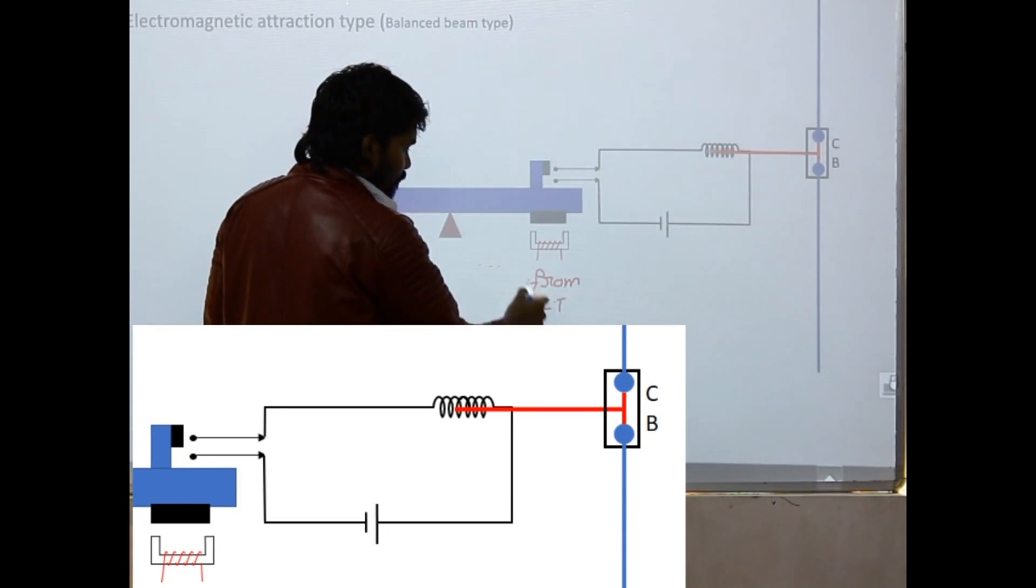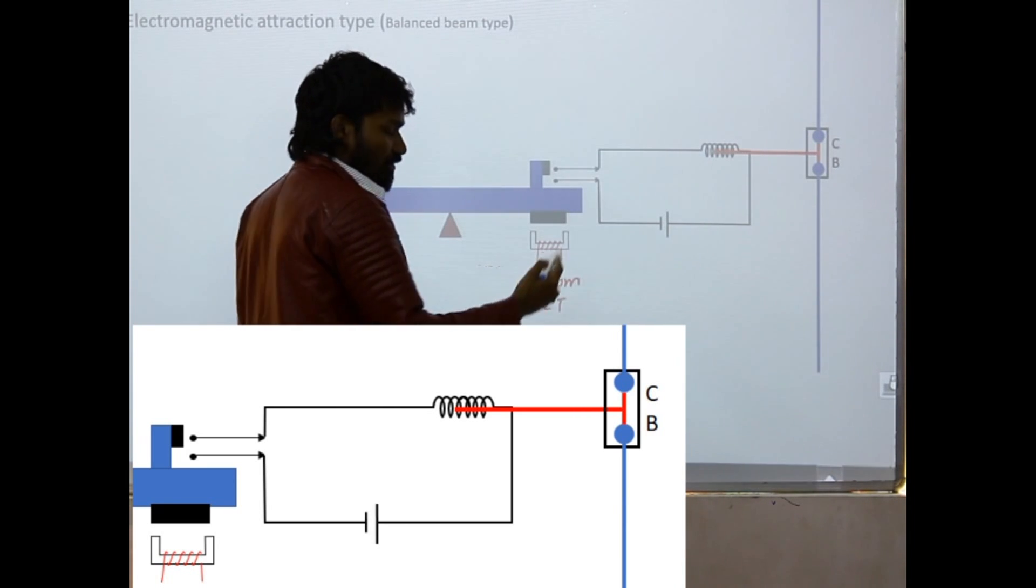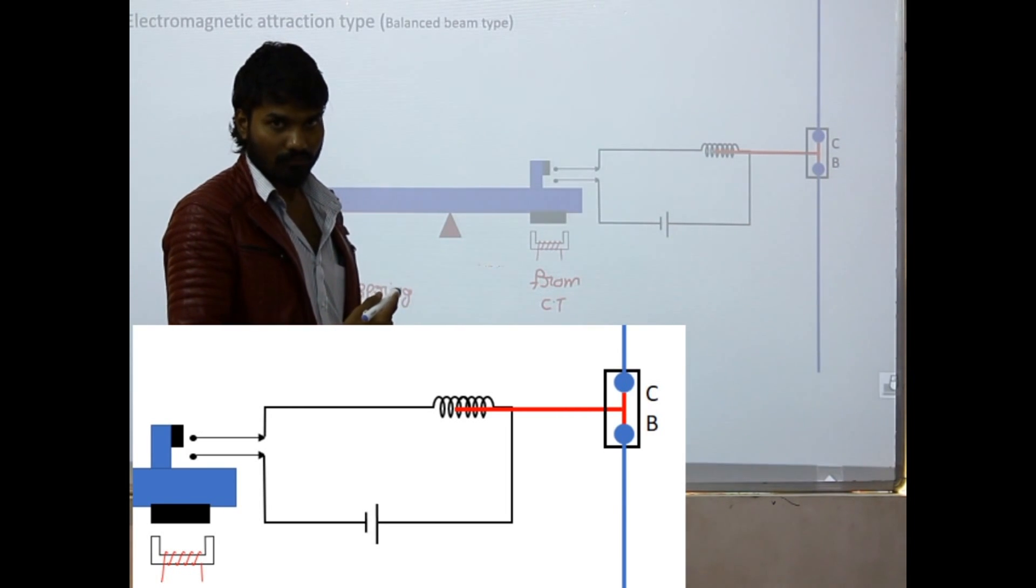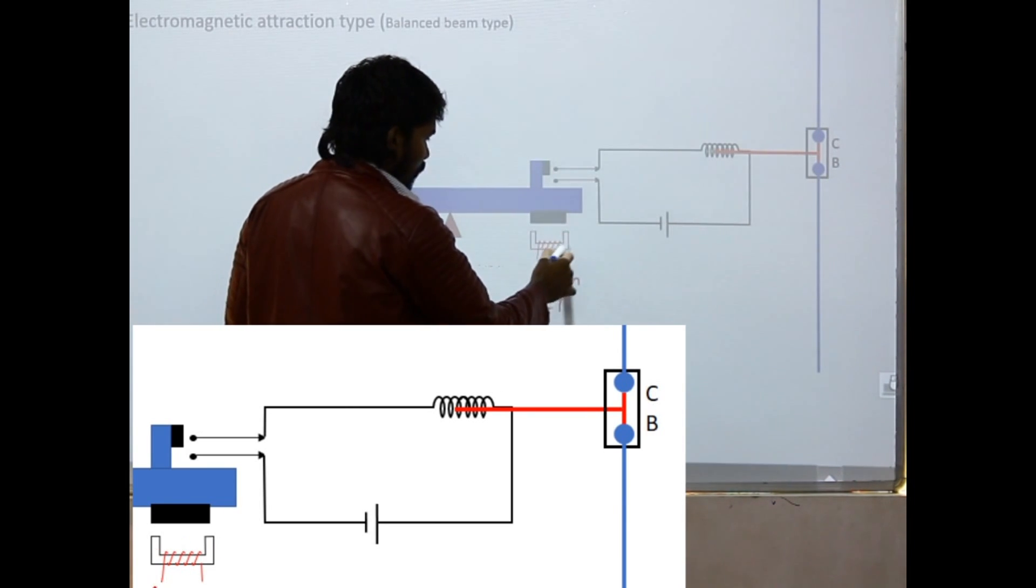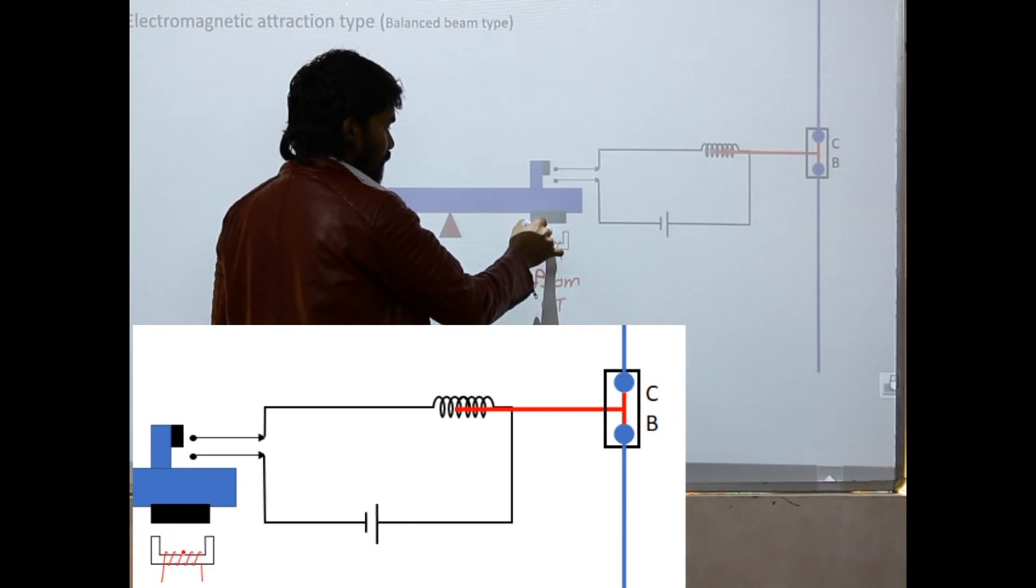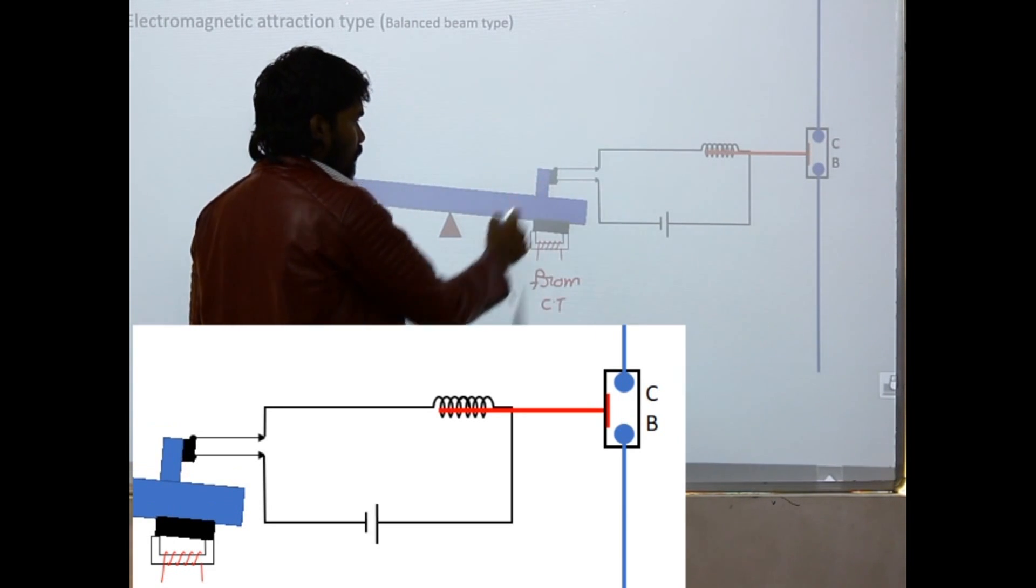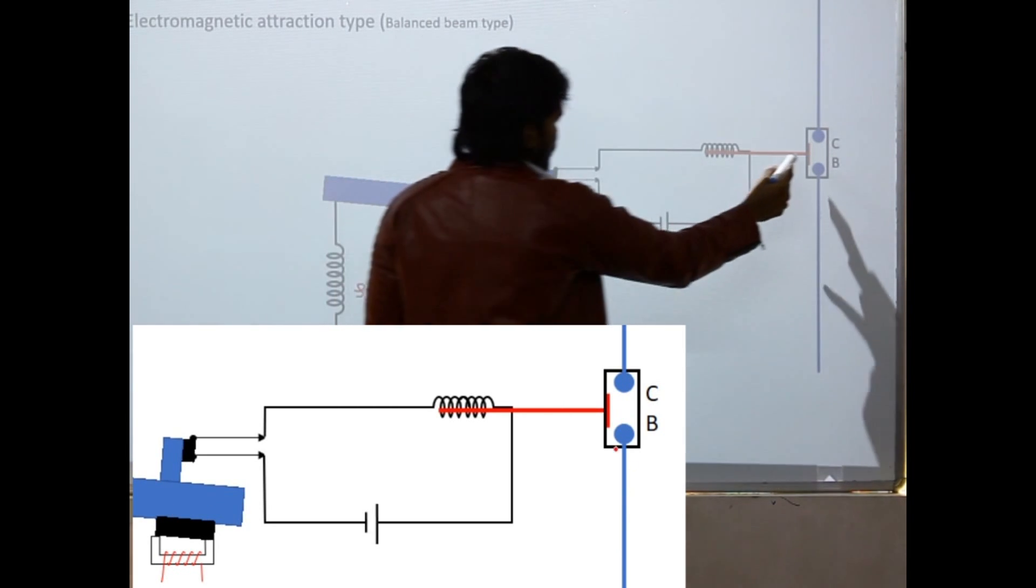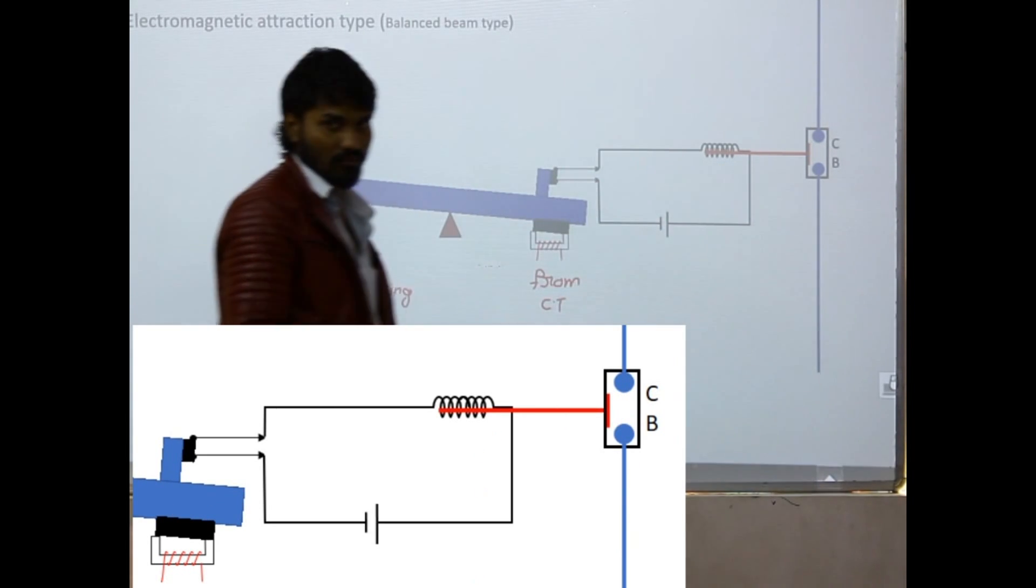If the CT force is more, means if current is more, then more flux will be produced, more attraction force. And now it will pull down. These two contacts are closed. Hence again, circuit breaker is opened. So there is one type.